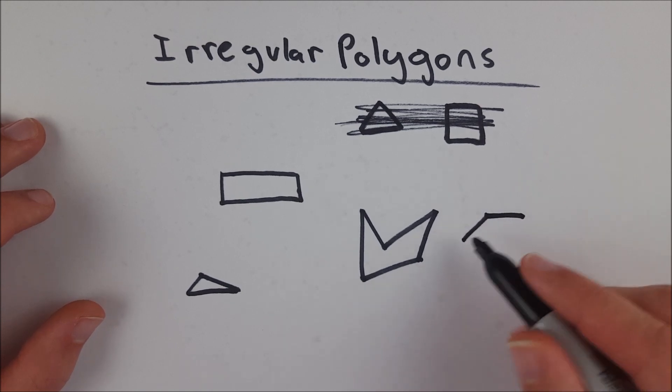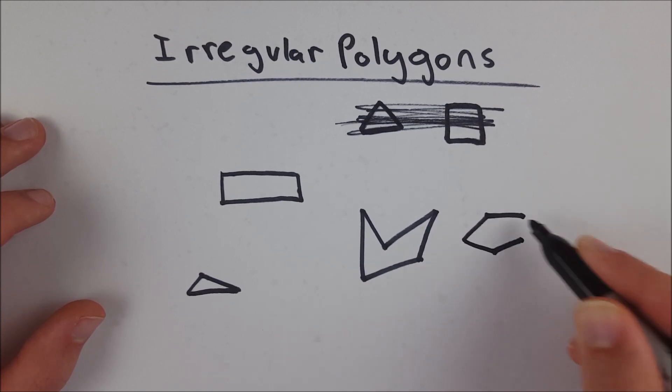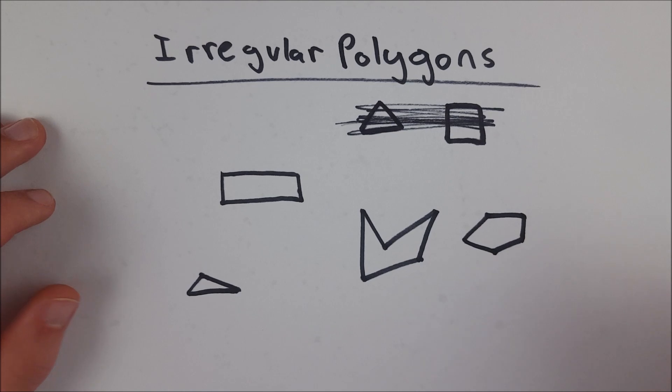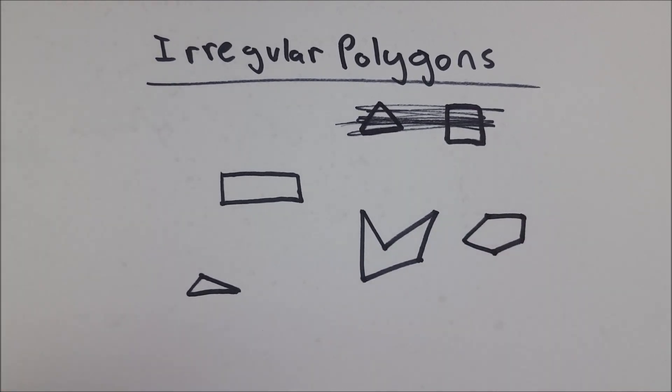If we look at, say, a pentagon that's irregular, it could look something like this. Not all of the sides are equal, and not all of the angles are equal. So this is also an irregular polygon.